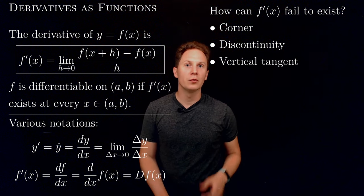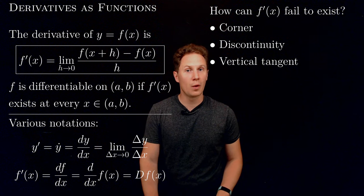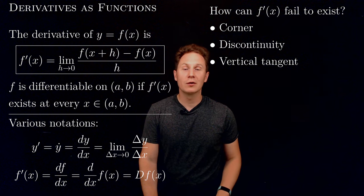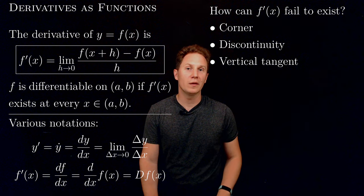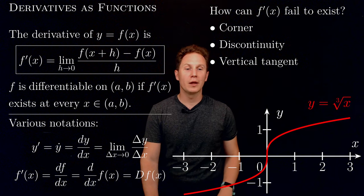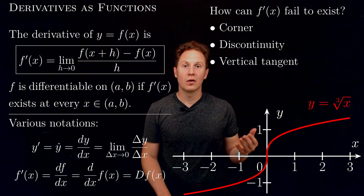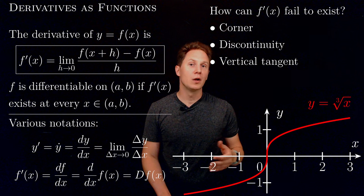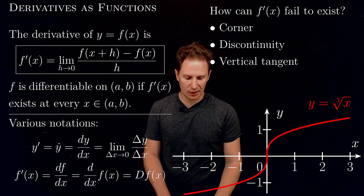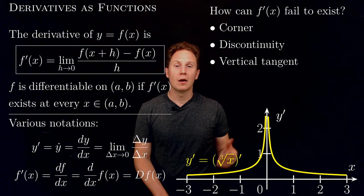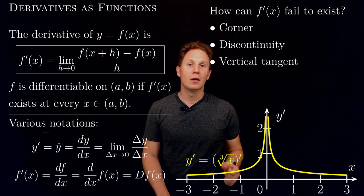Yet another way for the derivative to not exist is f having a vertical tangent at x — a tangent line parallel to the y-axis. There the slope is infinite, so it cannot be assigned as a value by the derivative function. For example, the cube root of x has the y-axis as its tangent line at x = 0, which is a vertical tangent with infinite slope. When we compute the derivative of the cube root of x and plot it, the graph clearly shows that as x approaches 0 the limit is positive infinity, so the derivative is not defined there.